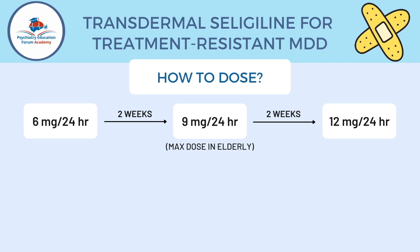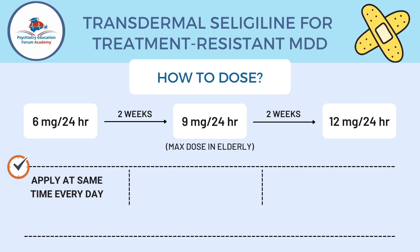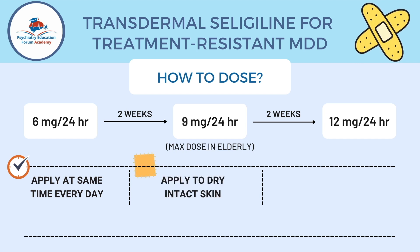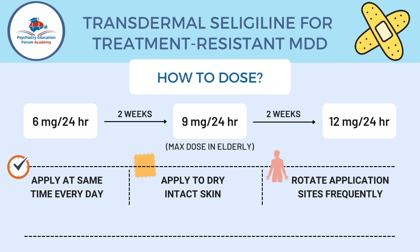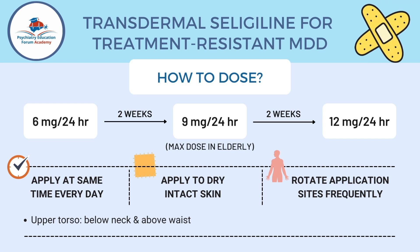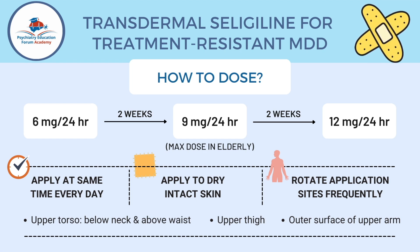A little bit more on application instructions with the patch: try your best to apply at the same time of day to maintain consistency. It should be applied to dry, intact skin, and you should rotate the sites frequently. This rotation part is really important — the most common side effect found in studies is the application site reaction, so rotating frequently helps avoid that. The recommended sites are: first, the upper torso between the neck and above the waist; second, the upper thighs; and third, the outer surface of the upper arm.